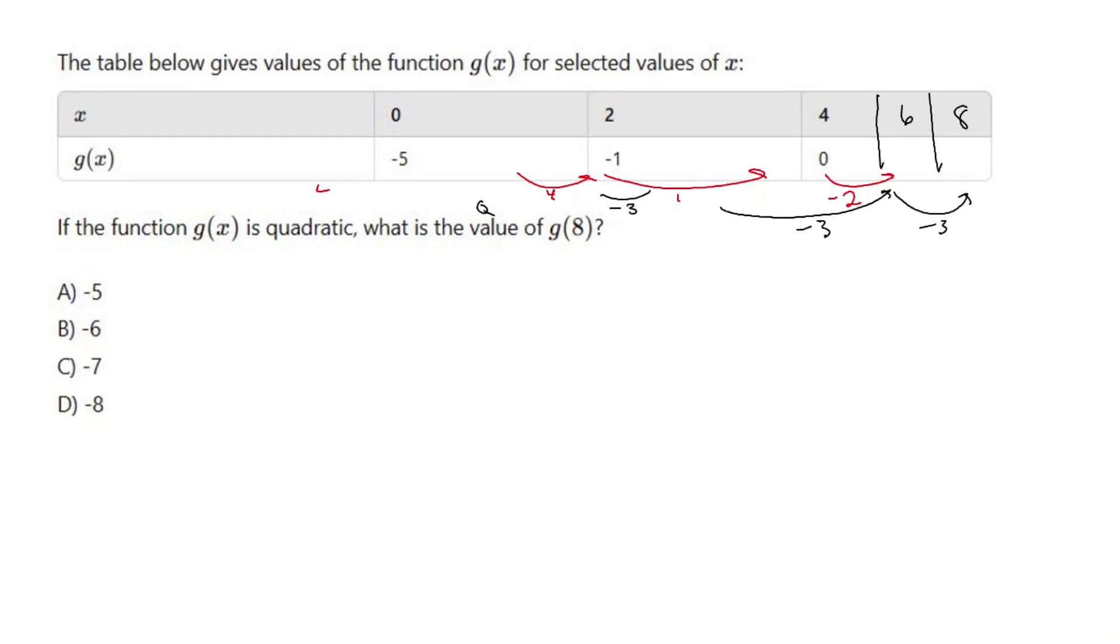And in order to subtract 3 again, you would have a change of -5. So 0 minus 2 is going to be -2. I can handle that. And -2 minus 5 is -7. Therefore making our answer -7.